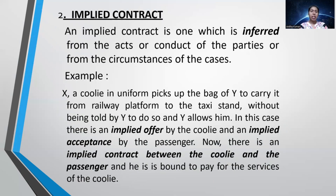What is an implied contract? An implied contract is one which is inferred from the acts or conduct of the parties, or from the circumstances of the case. Implied means indirectly. For example, if you are riding in a government bus, it means you have to take a ticket because you are utilizing the service. Nobody will explicitly tell you that you are entering into a contract with the driver and conductor — this is an implied condition.